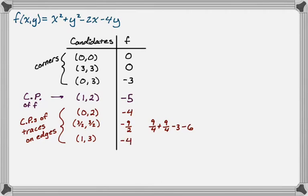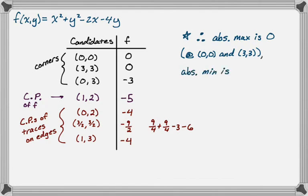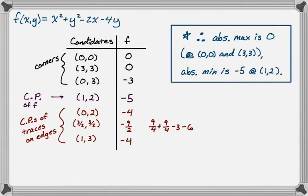Okay, so that's all the candidates, all the function values, and so we can confidently-ish say that the absolute maximum is definitely 0, which is kind of surprising, and that actually occurred at (0,0) and (3,3), both of which were corners, and then the absolute minimum was -5, and that occurred at (1, 2), which was the critical point of the function, but those critical points along the trace on the edges, those also could have worked out, they just didn't in this case. Alright, so that's the whole thing. If you're neat and organized about it, these aren't really that bad. I hope you found this helpful, and good luck.